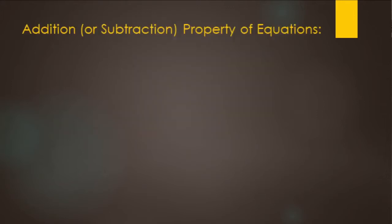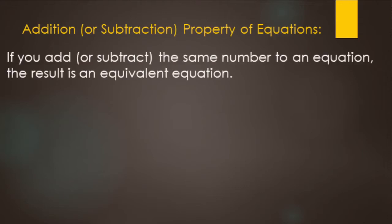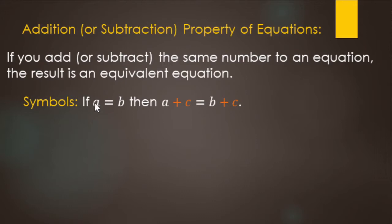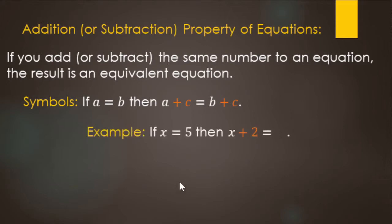The part where we got rid of the three dots on both sides is an example of the addition or subtraction property of equations. Basically, you can add or subtract the same number to both sides of an equal sign. In symbols: if a equals b, we can add c to both sides. For example, if x equals 5 and we add 2 to both sides, we get x plus 2 equals 7 — an equivalent equation.